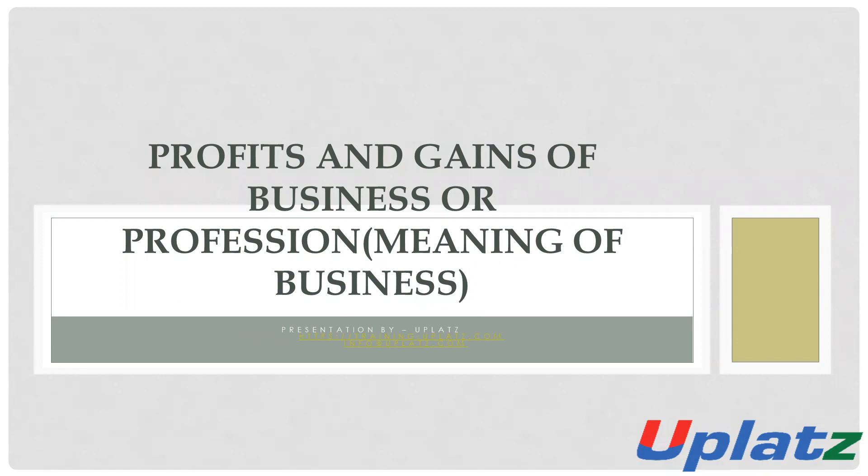As per income tax, there are five heads of income. Number one is salary. Number two is house property. Number three is PGBP. Number four is capital gain, and number five is income from other sources.